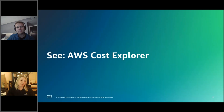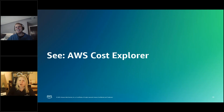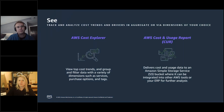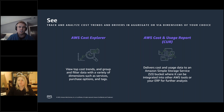Moving to the See pillar: we'll visualize Graviton spend focusing on RDS and EC2 in Cost Explorer. The core tenants of See include cost reporting and monitoring, account and tagging strategies, and cost showbacks and chargebacks. Two great AWS native tools are AWS Cost Explorer and the AWS Cost and Usage Report — often called the CUR. Cost Explorer helps visualize, understand, and manage AWS cost and usage over time, from high-level total spend to identifying specific trends, cost drivers, and anomalies.